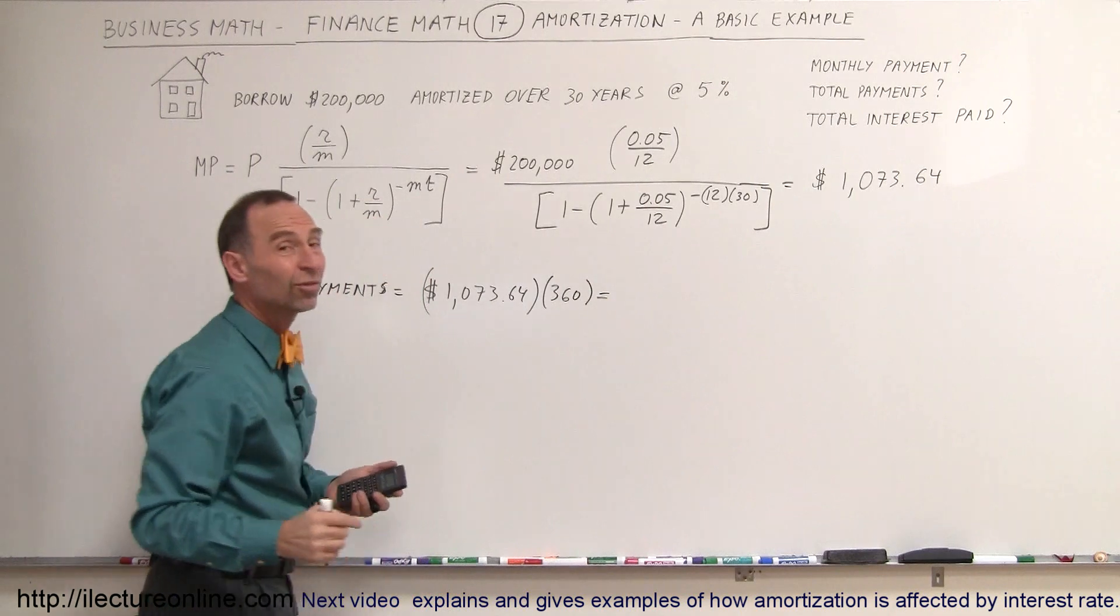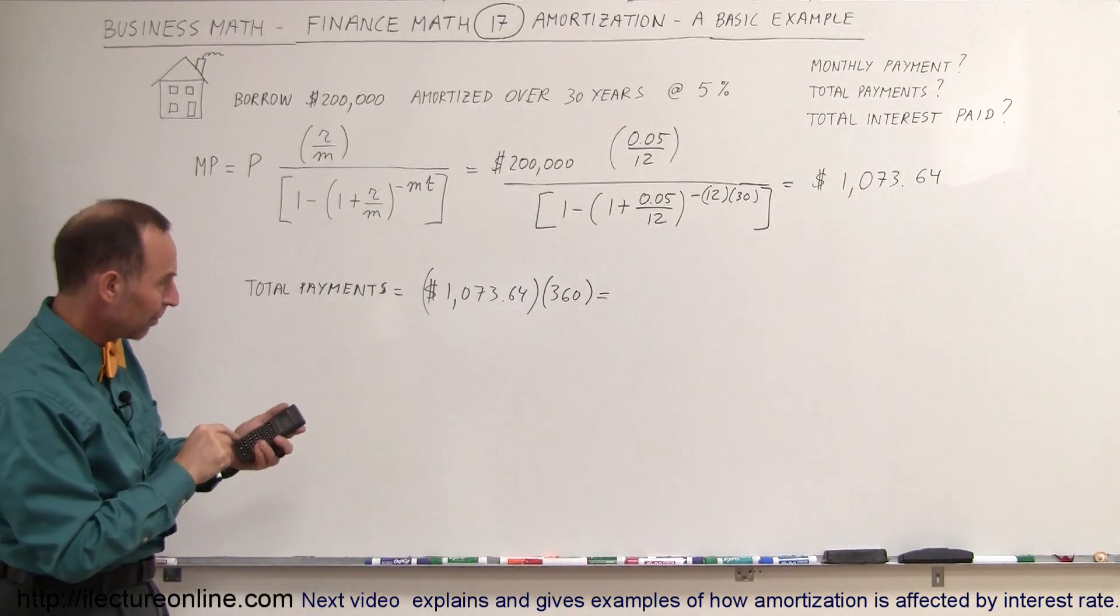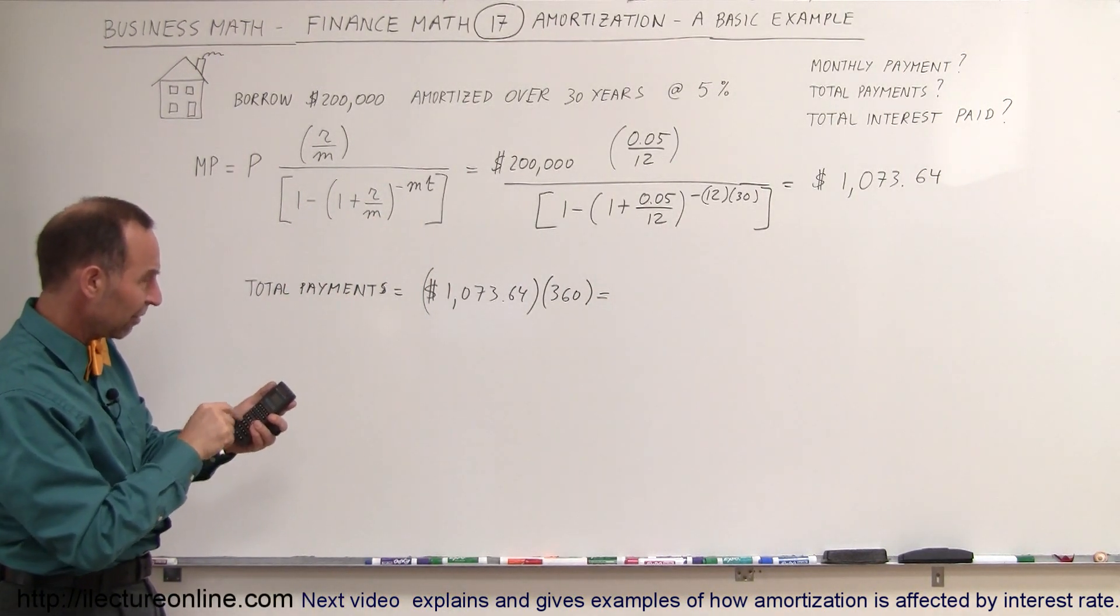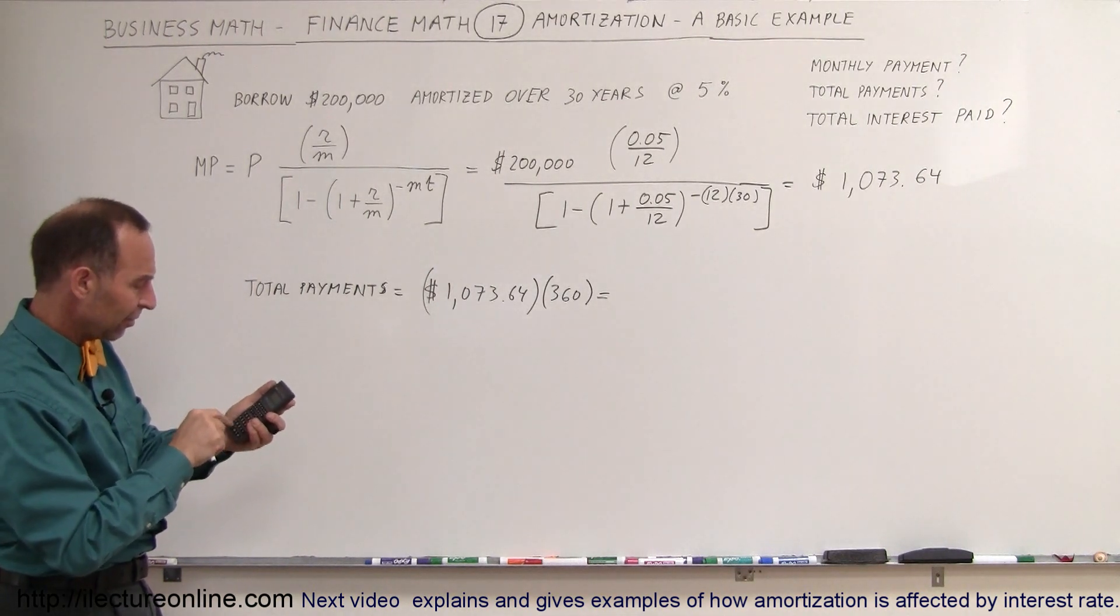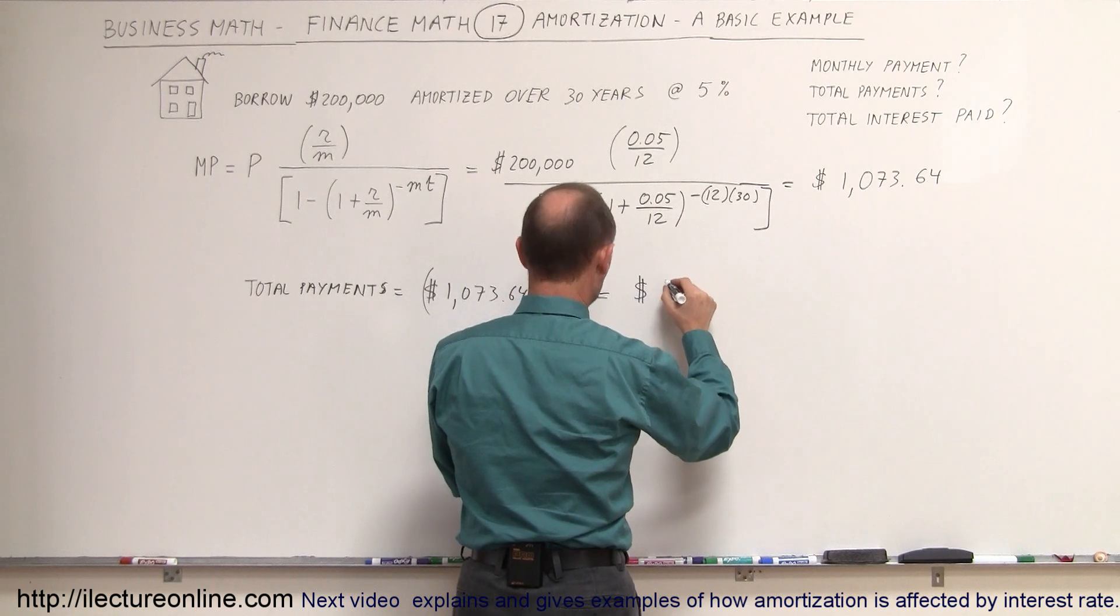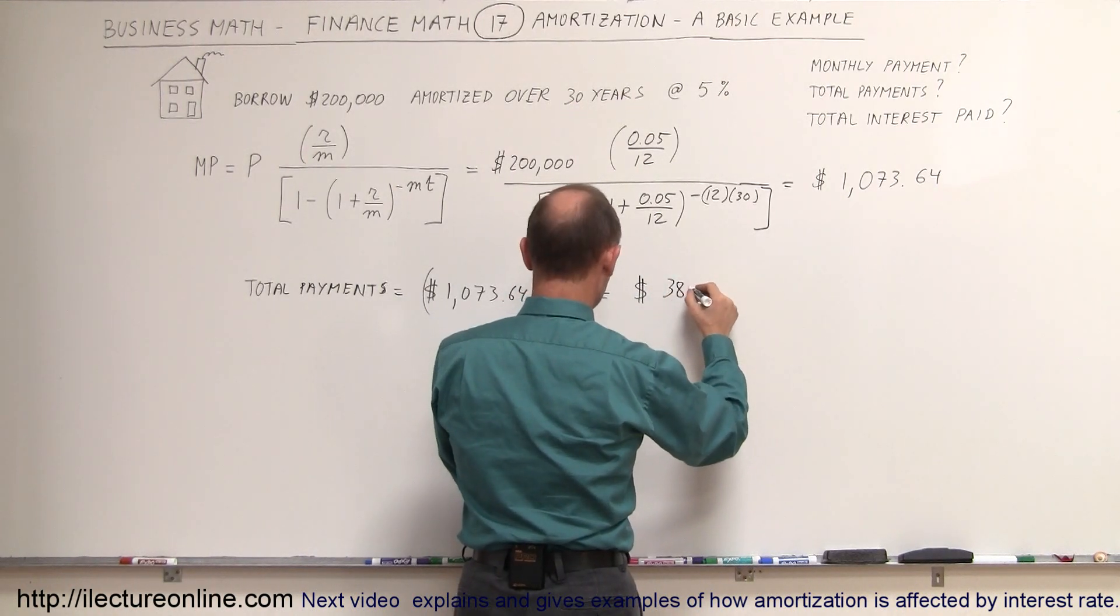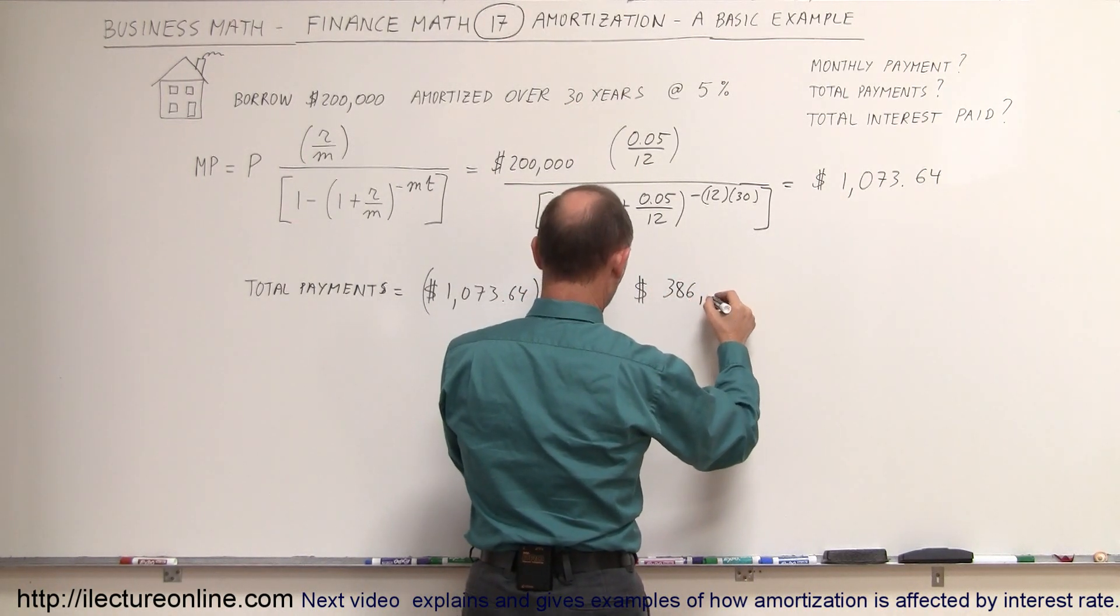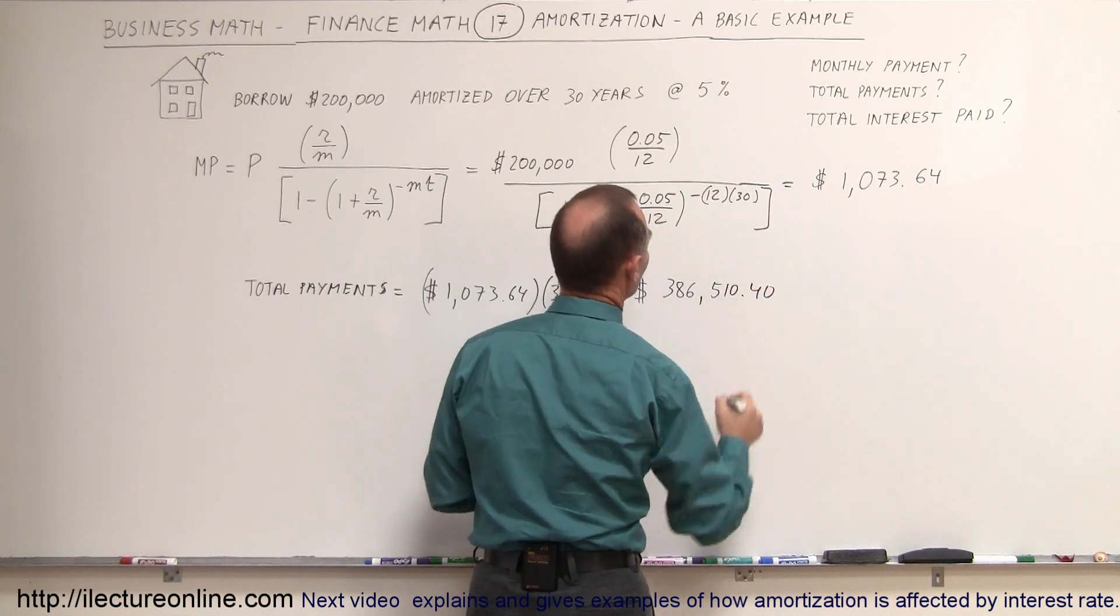So we multiply that number, so we have $1,073.64 times 360, and so the total amount of money paid back to the bank will be $386,510.40.